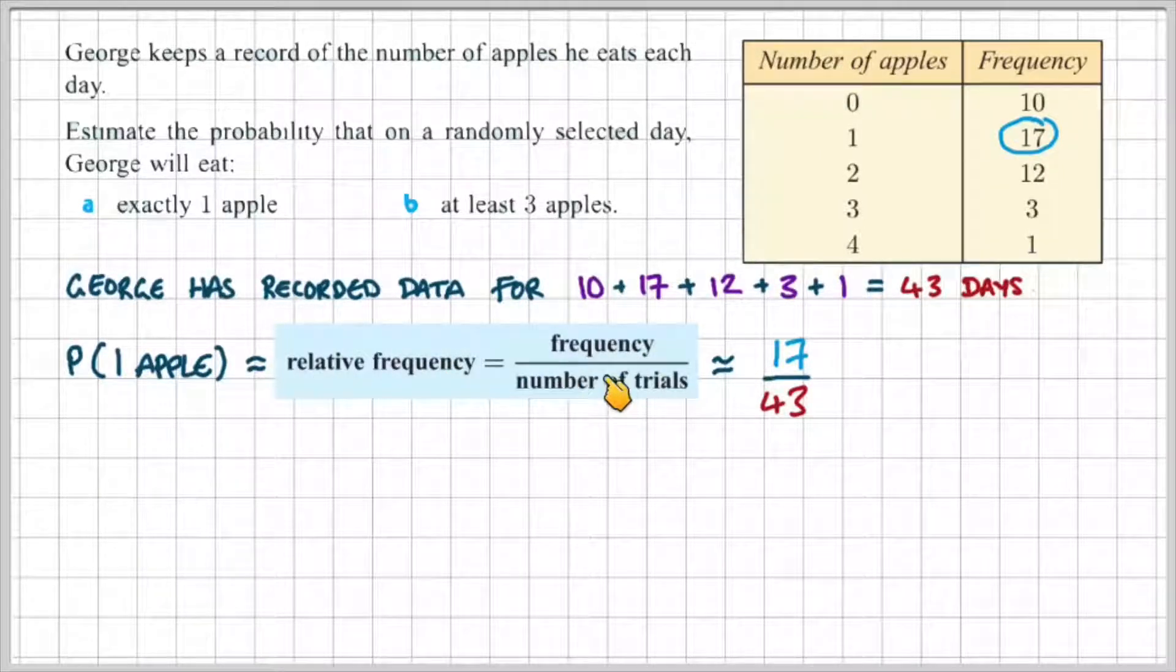That's the frequency divided by the number of trials. So, we know from the table that George ate exactly one apple on 17 different days. So, that will be 17 divided by the number of trials, which is 43 days.